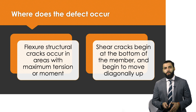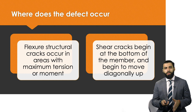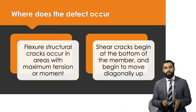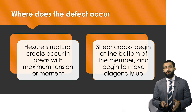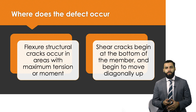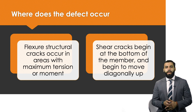A flexural crack usually takes place in the area with the maximum tension or moment — in our previous example it was in the middle. You can see the load on the structure, and in the middle there were cracks starting from the bottom that look vertical — those are flexural structural cracks. Shear cracks, on the other hand, start on the sides of the member, diagonal at the bottom, and move upward in a diagonal fashion.